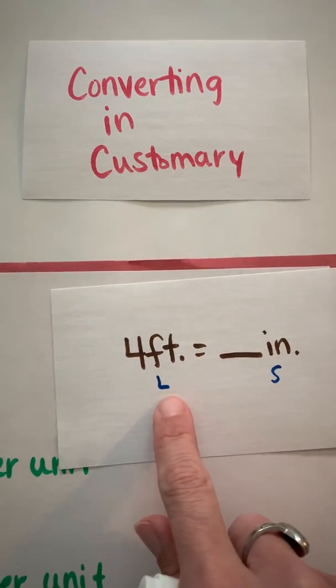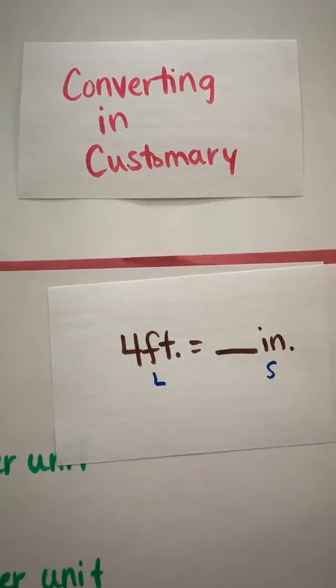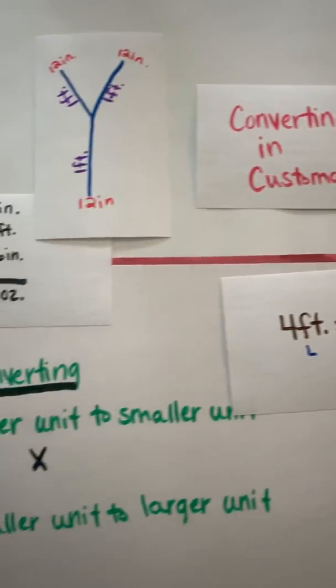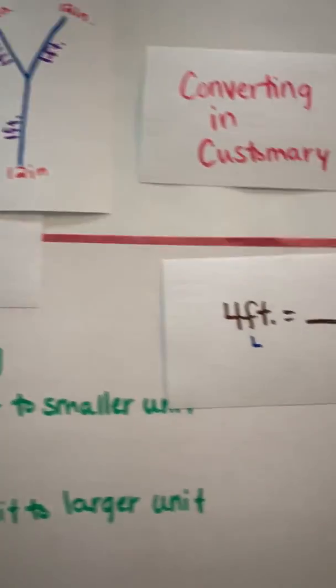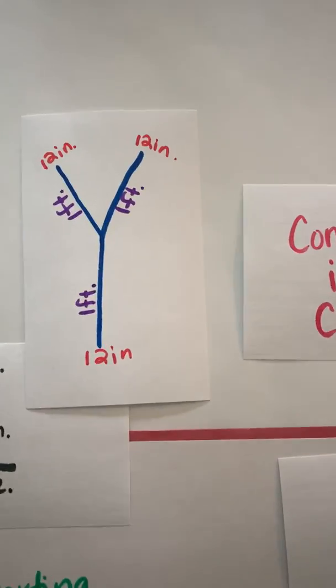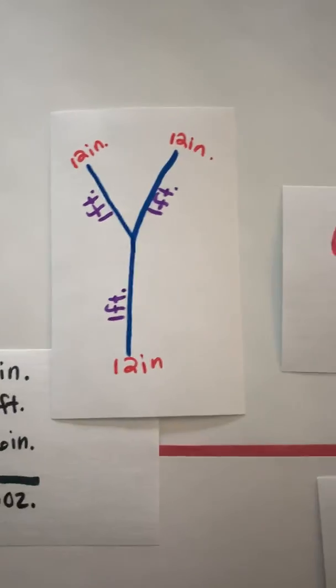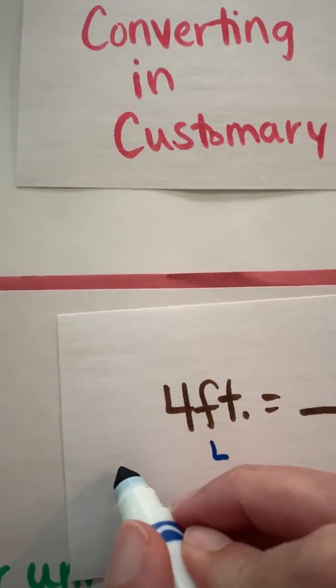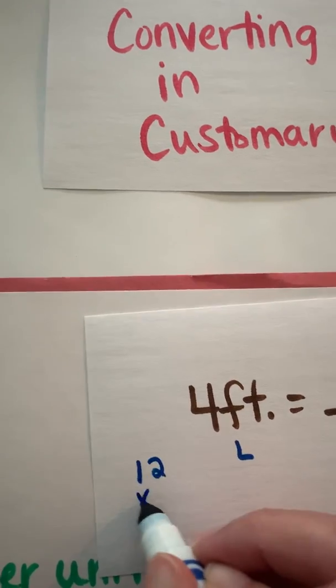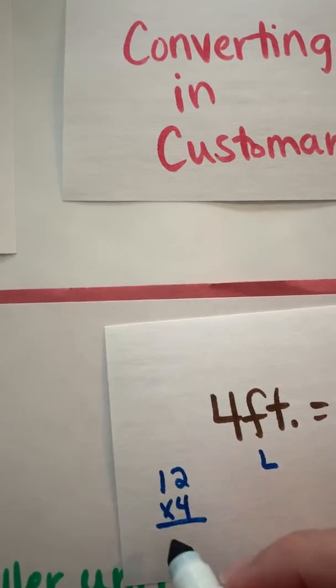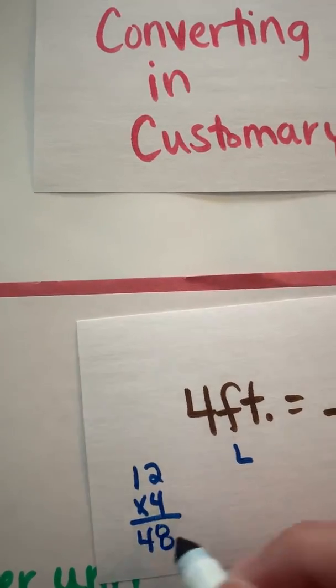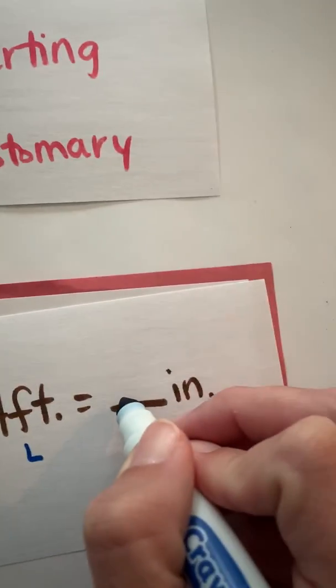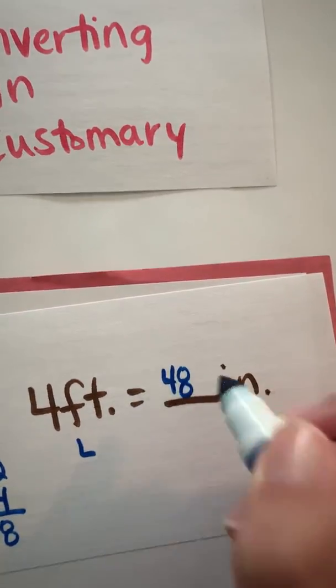And last year in fourth grade you learned that you would multiply for that. So if I think back to my graphic organizer and I know that 12 inches are in one foot, then I'm going to multiply 12 times 4, which is going to be 48 if I know my facts. So 4 feet is going to be equal to 48 inches.